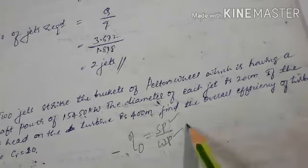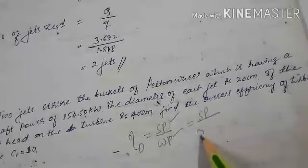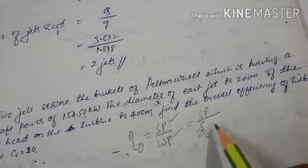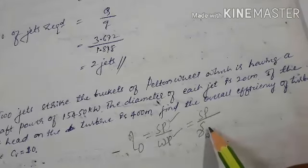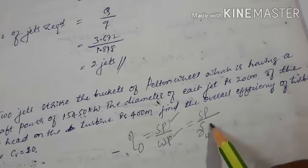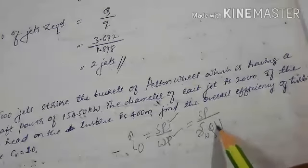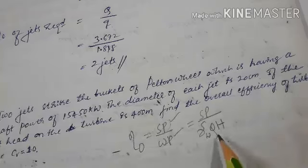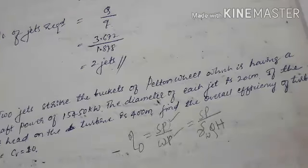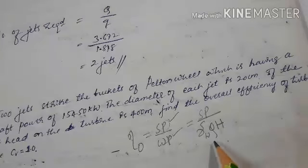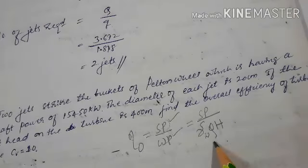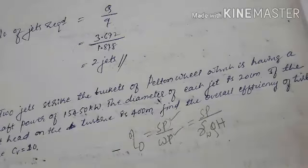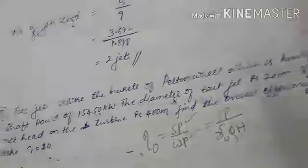Water power = γ × Q × H, where γ is the specific weight of water. From this formula we can get the water power, and once we know the water power we can easily get the overall efficiency of the turbine.